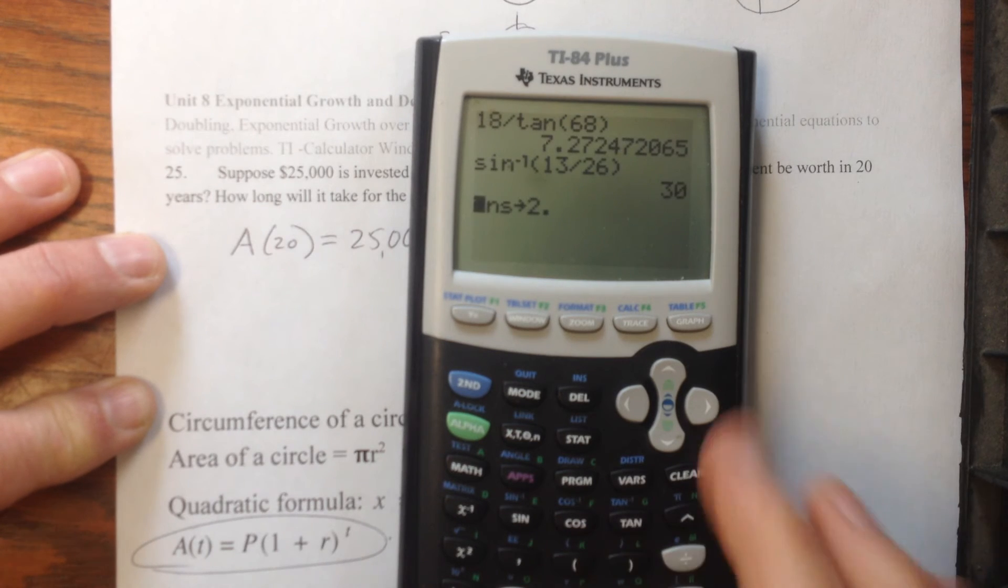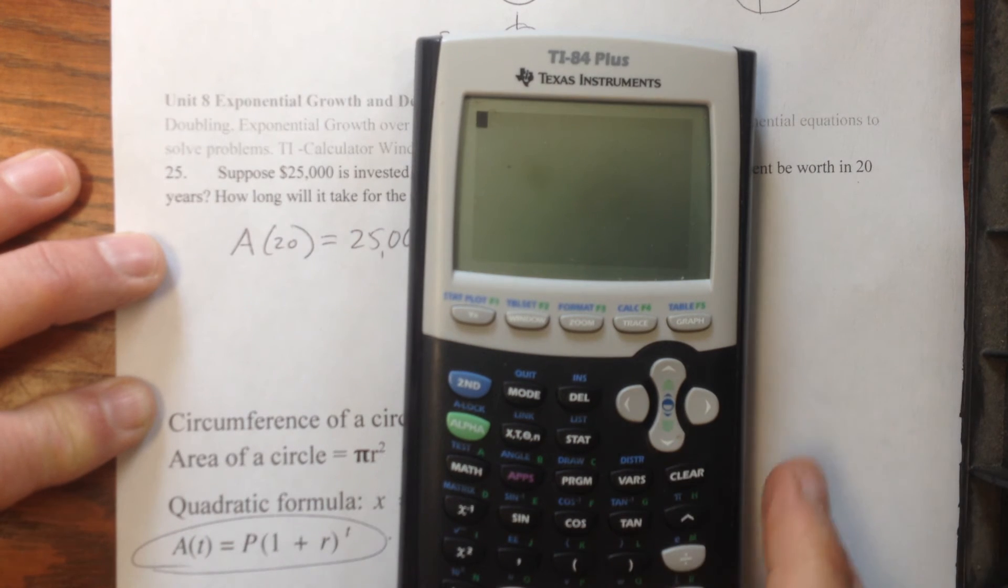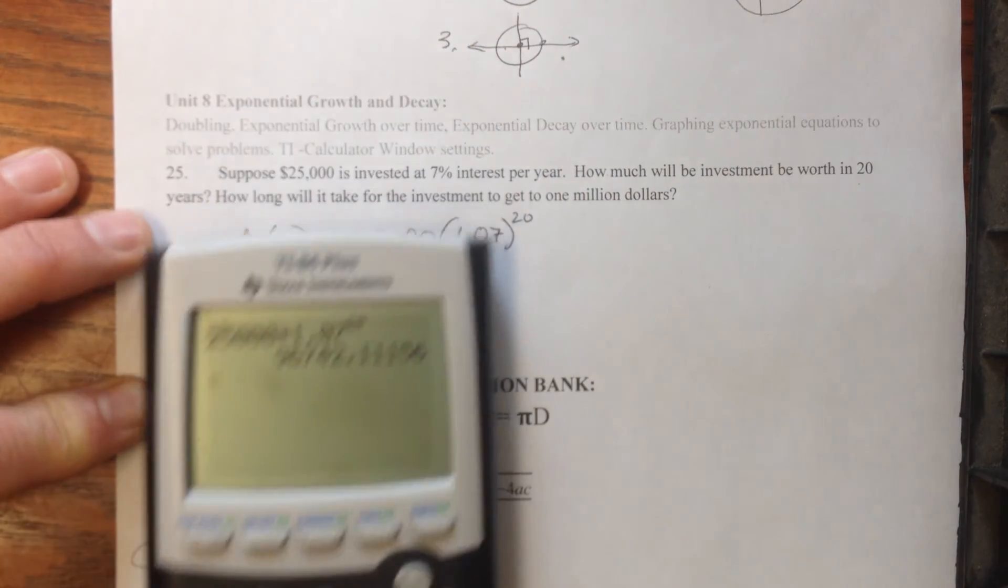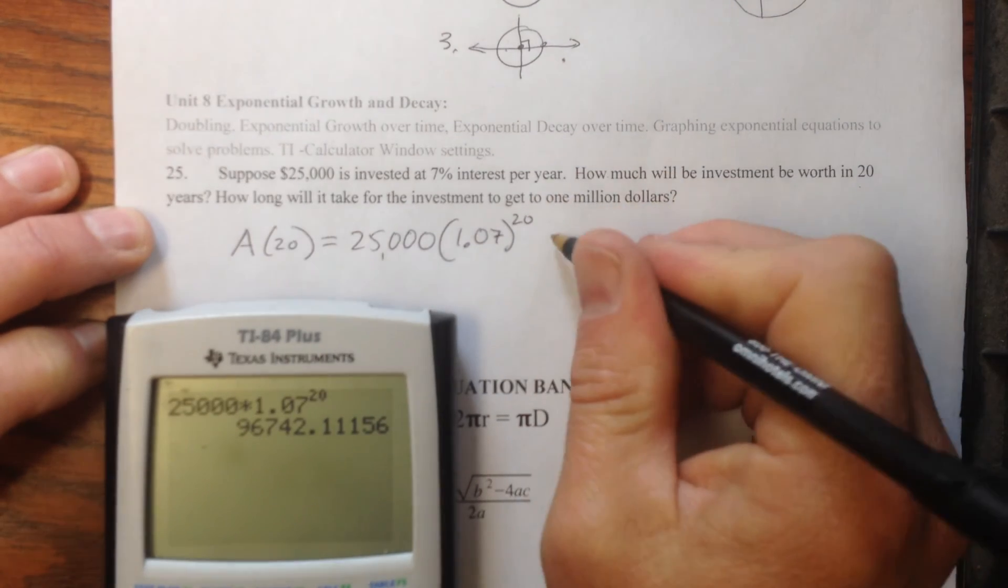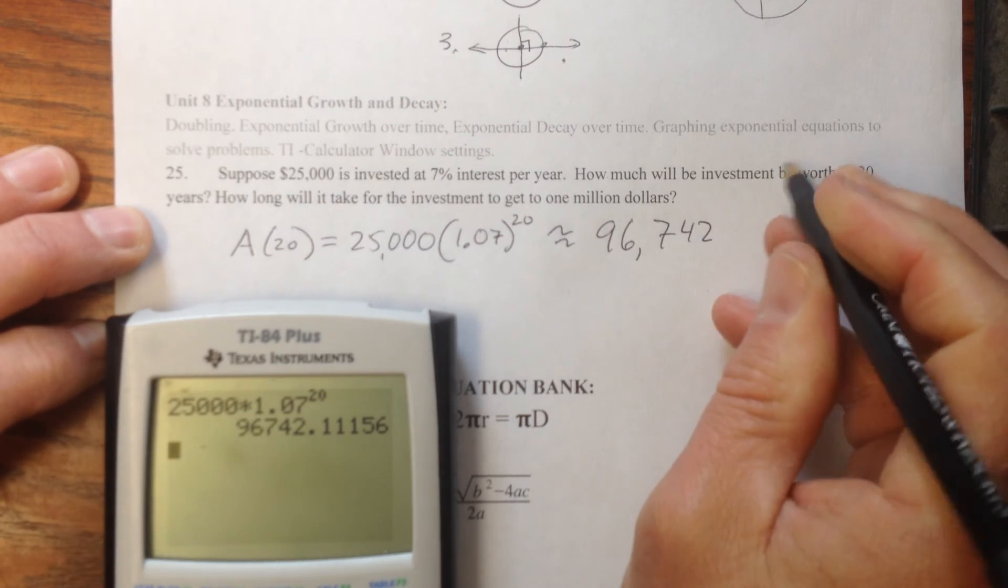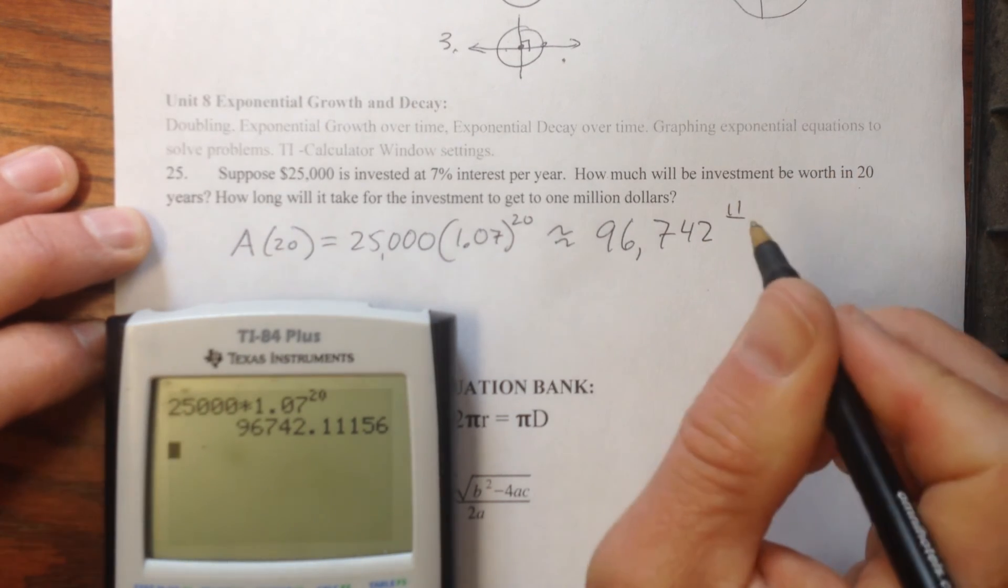So I get my trusty calculator, turn that on, and I have 25,000 times 1.07 carat to the 20, 20, and hit enter, and I get approximately $96,742.11.